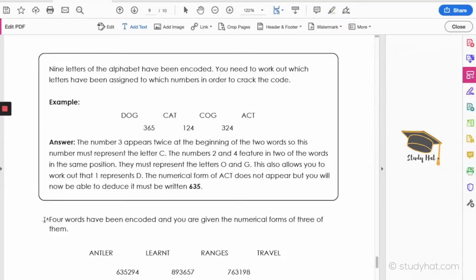Okay, nine letters of the alphabet have been encoded. You need to work out which letters have been assigned to which numbers in order to crack the code. And we've got the example. The number three appears twice at the beginning of the two words, so this number must represent the letter C. And we can see here it is, that we've got CAT and COG.